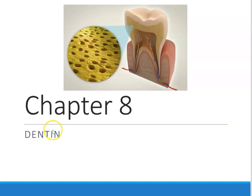We're going to learn about the dentin. Just to recap, dentin is right under the enamel. The enamel is the white part; the dentin is inside or underneath the enamel and it's yellow. What's cool about the dentin is that they have these holes or tubules — we call them dentinal tubules. Keep that in mind as we progress through the chapter.